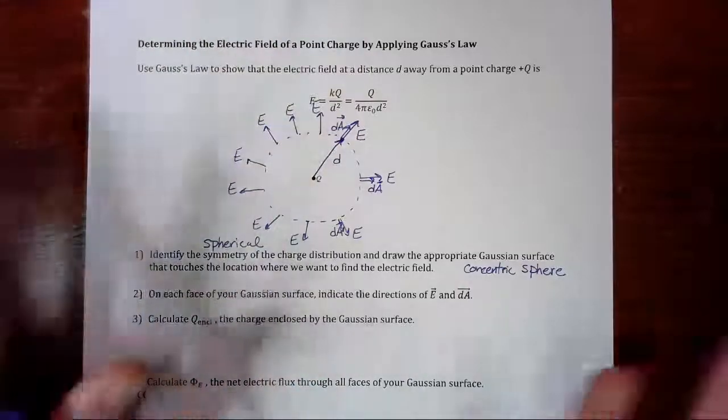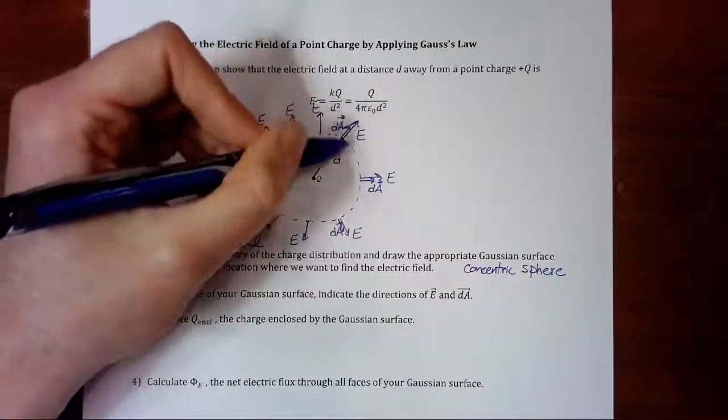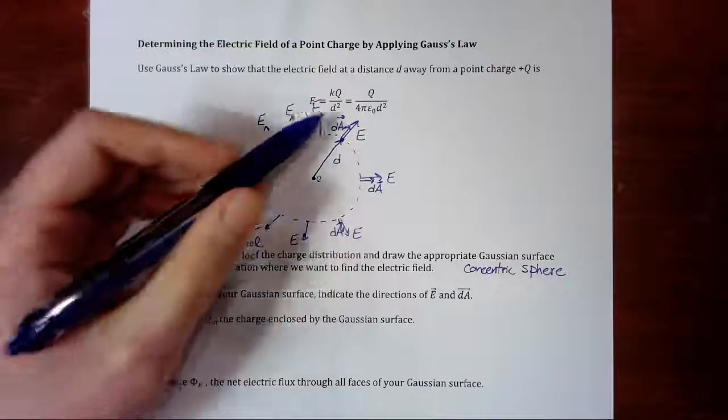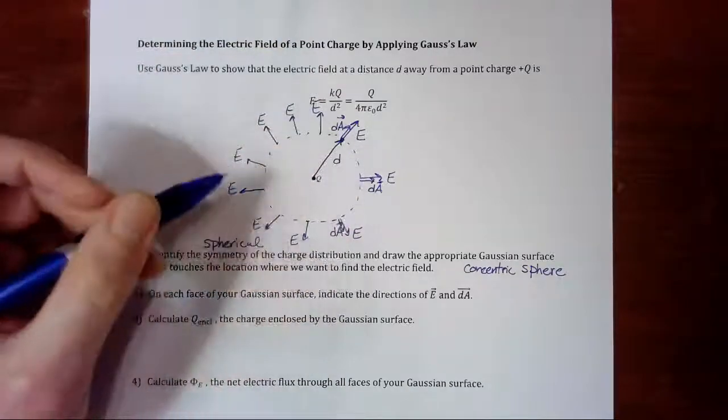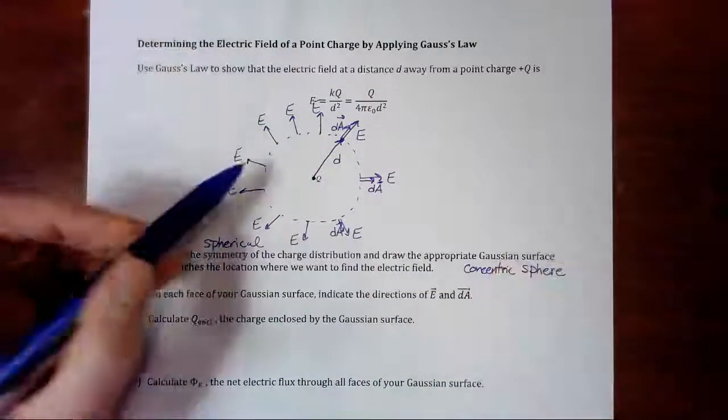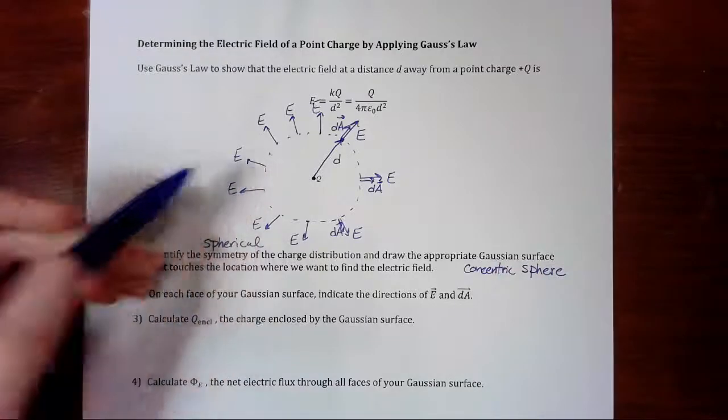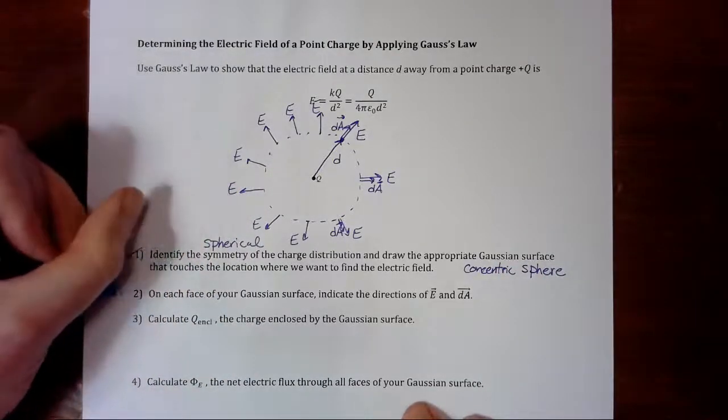perpendicular to the imaginary sphere, everywhere. And all those E vectors and all those dA vectors are all going to be parallel to each other everywhere. So everywhere along the surface of the sphere, we're going to have a flux. So step one is done, step two is done.